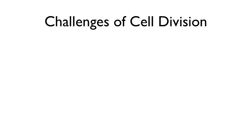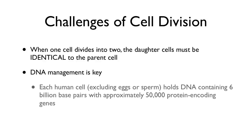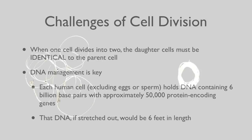Cell division is really important, but there are a lot of challenges and problems we have to deal with. You have to make sure that when one cell divides into two, the daughter cells — they're just called daughter cells by convention — must be identical. And the management of DNA is key. We're talking about a lot of DNA. For humans, we're talking about six billion base pairs with about 50,000 protein-encoding genes. If you stretched it out, there would be six feet of it.